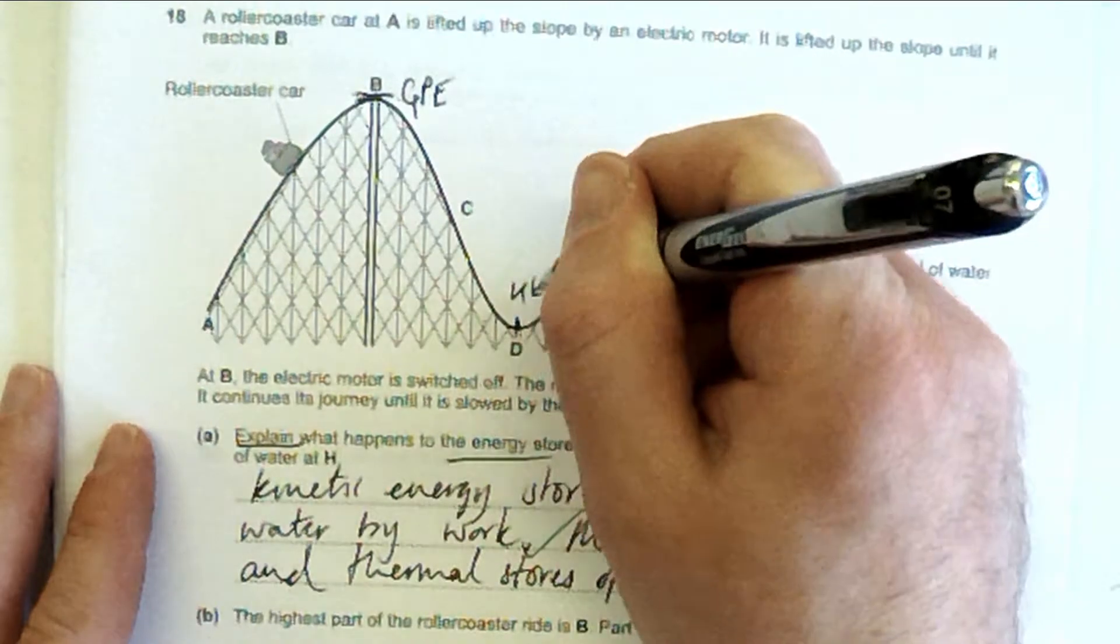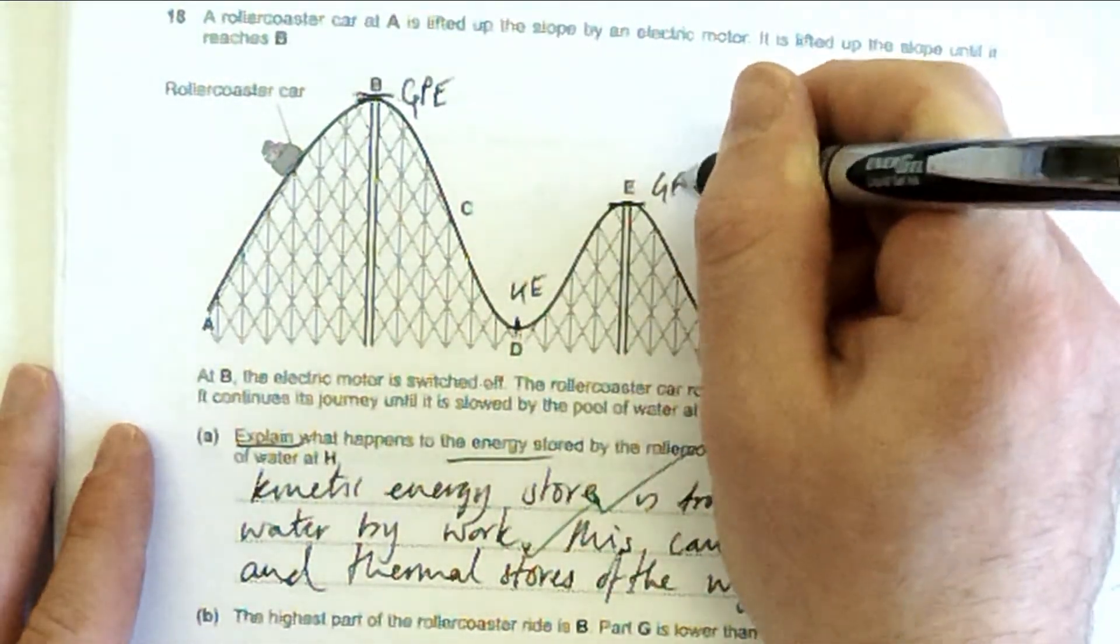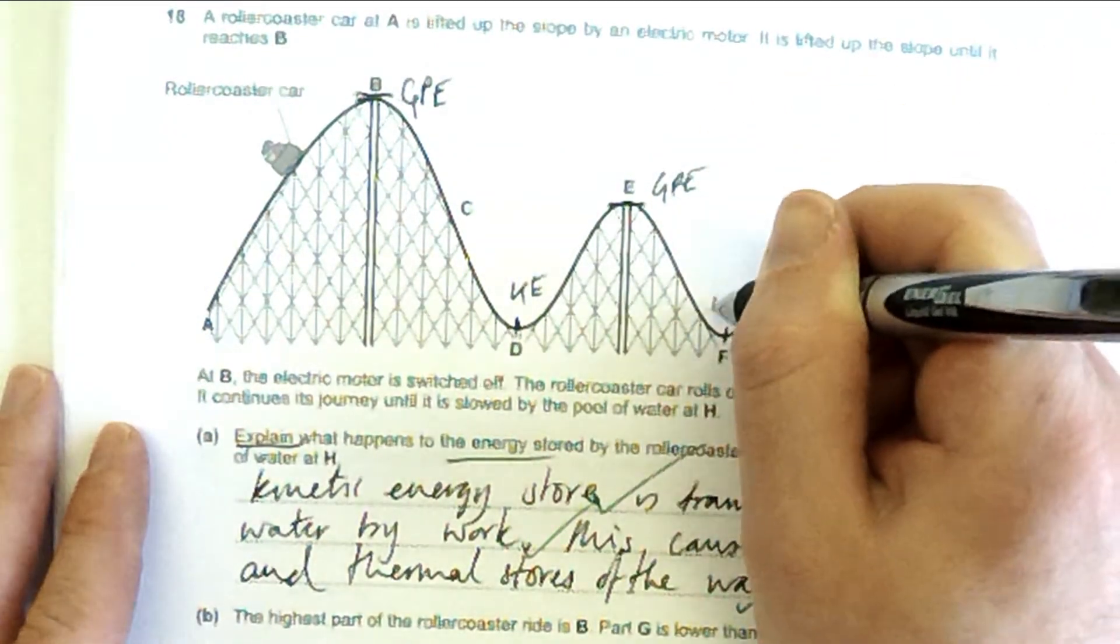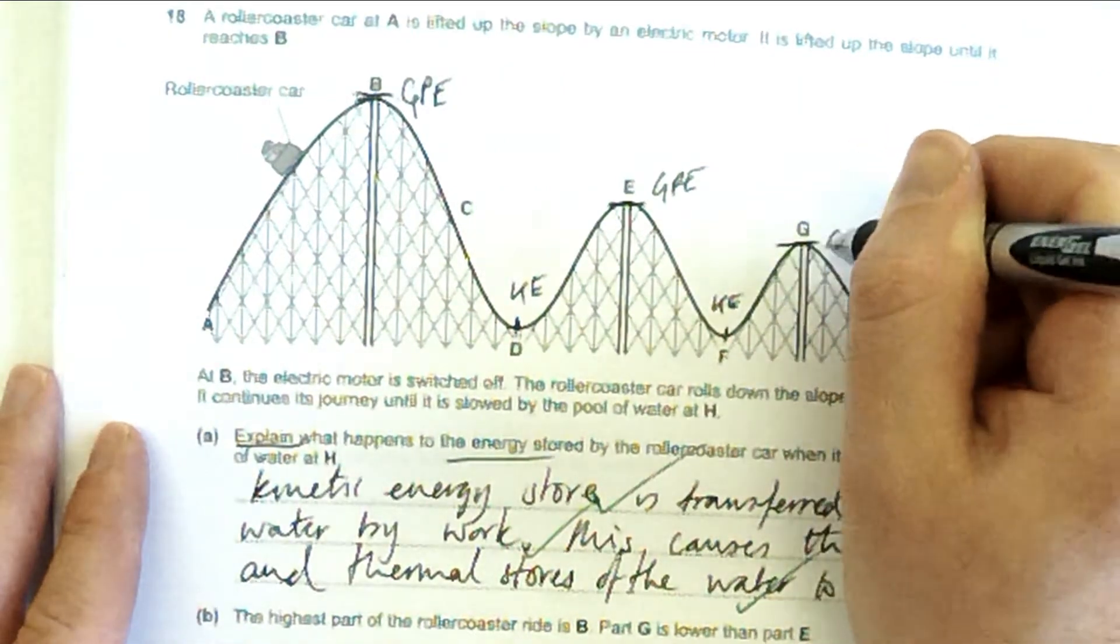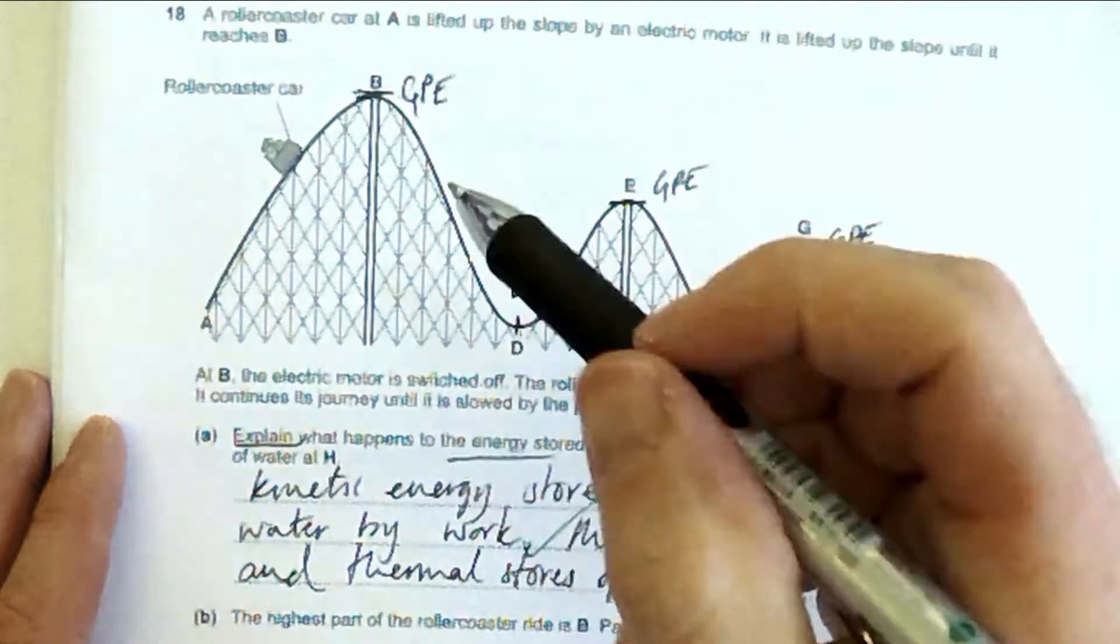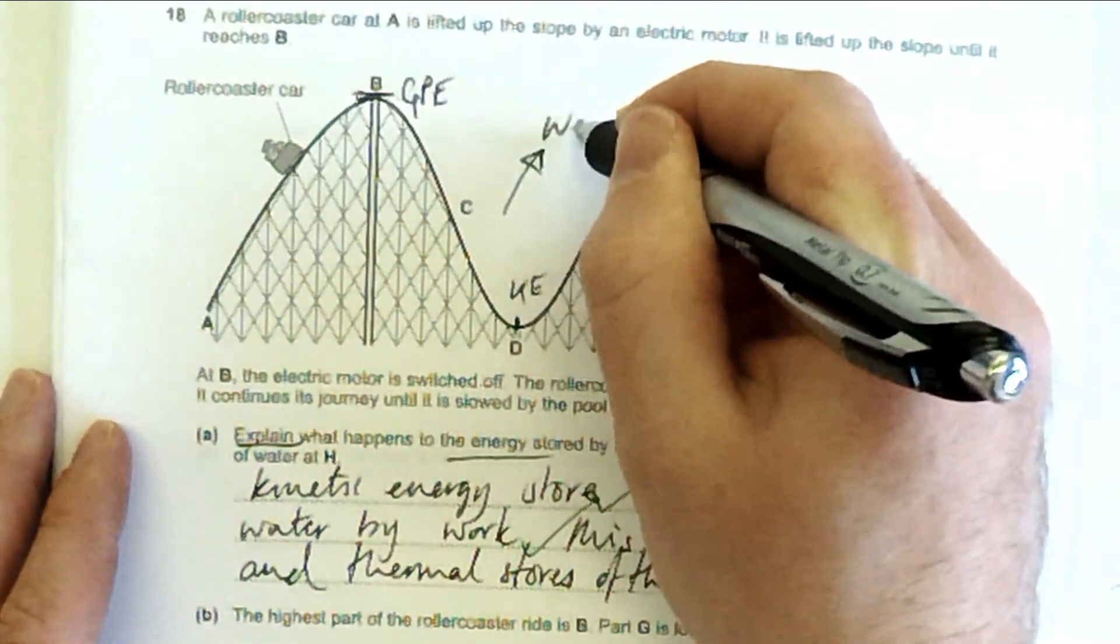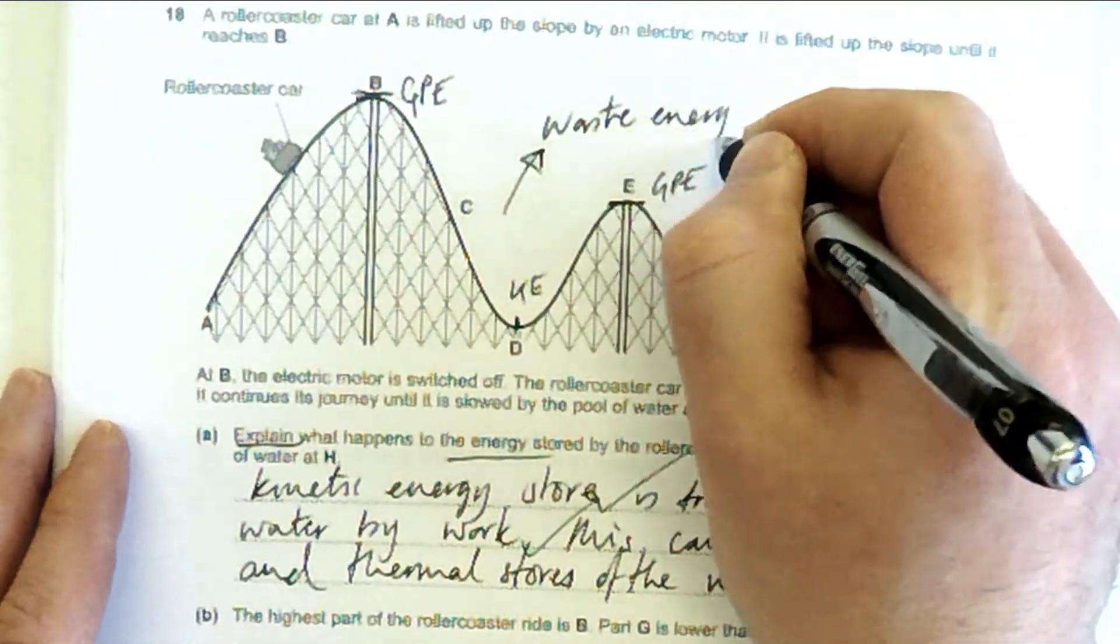is converted to kinetic energy at D. And not all of that kinetic energy is converted back into gravitational potential energy at E. And not all of that gravitational potential energy is converted to kinetic energy at F. And not all of that is converted to GPE at G.